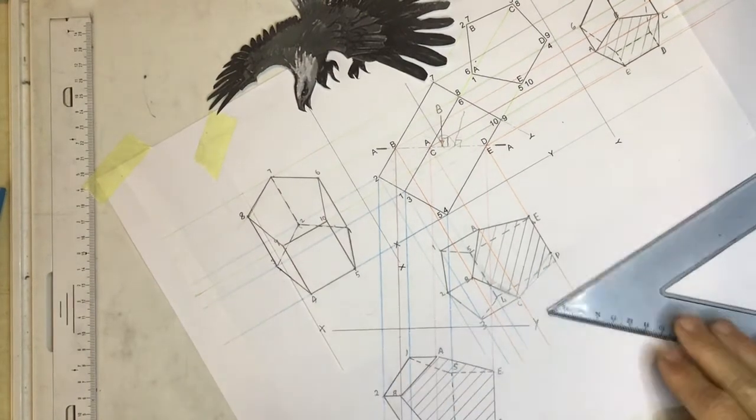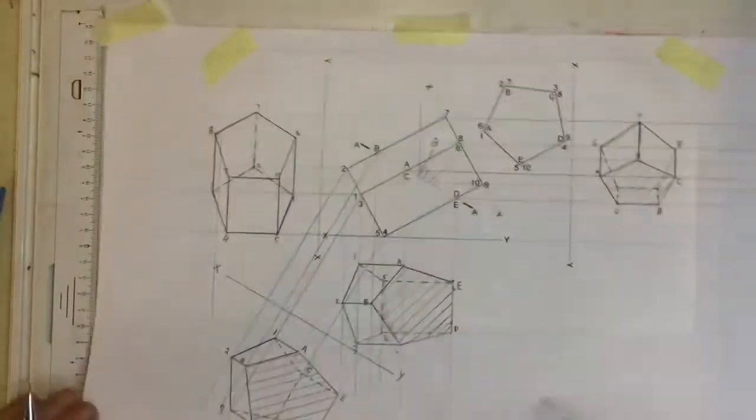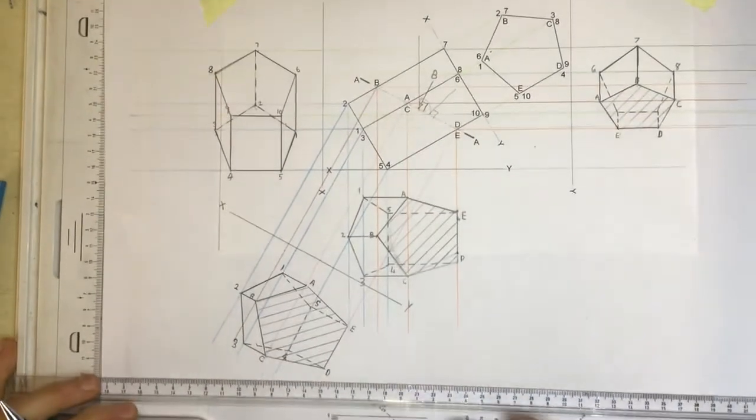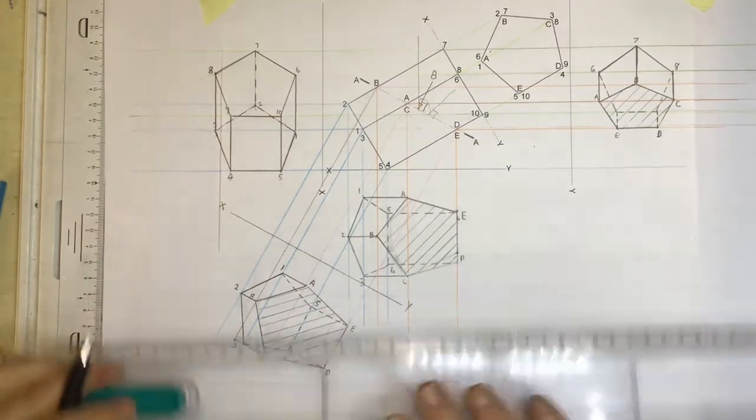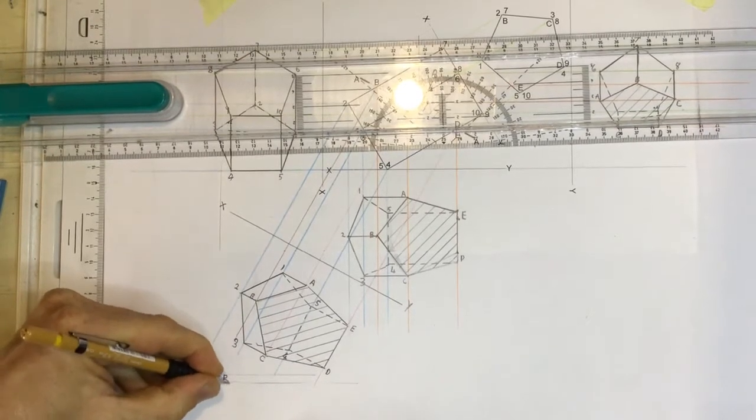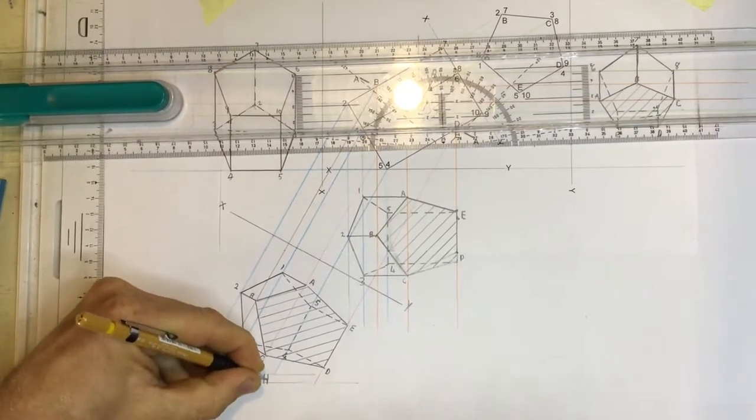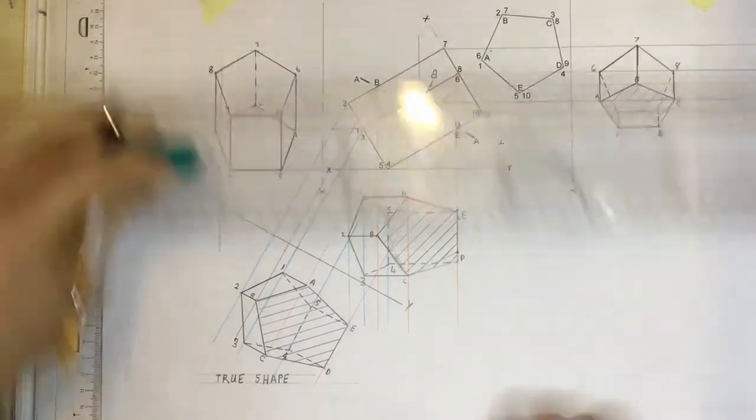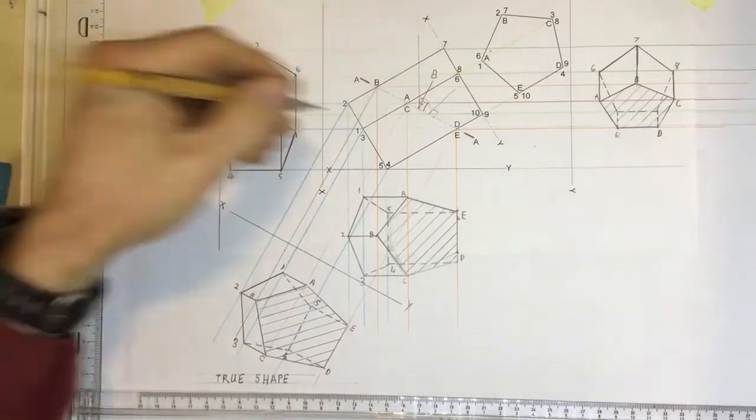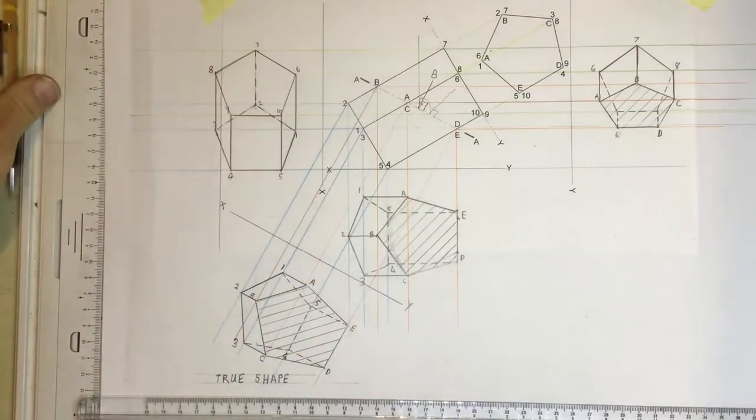For a few extra marks, you should always go back and just label these views. Draw some lines in over here down at the bottom. And you can say over here, true shape, T-R-U-E, shape, S-H-A-P-E. And you could also label that as the right view and sectional left view and sectional top view. You could write those labels in and that will be brilliant.